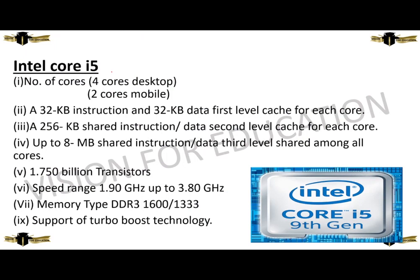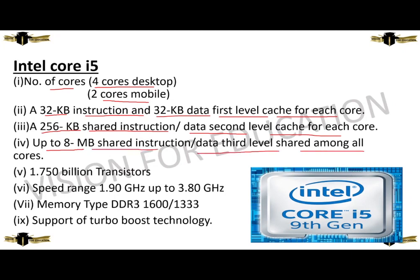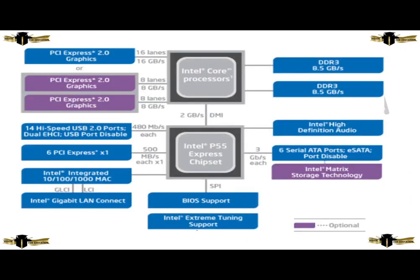Now we are going to discuss about Intel Core i5. It has 4 cores for desktop and 2 cores for mobile. It has 32 KB instructions and 32 KB data first-level cache for each core, 256 KB shared instructions/data second-level cache for each core, up to 8 MB shared instructions/data third-level cache shared among all cores. It has 1.75 billion transistors, speed ranging from 1.9 GHz to 3.80 GHz, memory type DDR3 1600/1333, and supports Turbo Boost technology. This is the architecture of Intel Core processor.